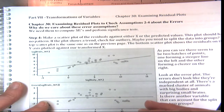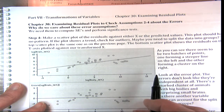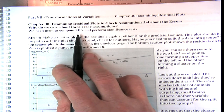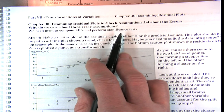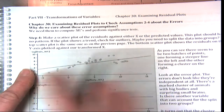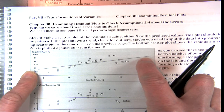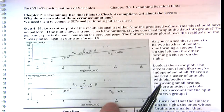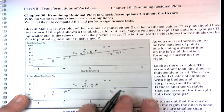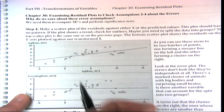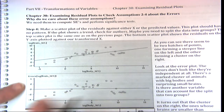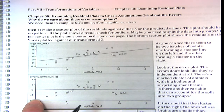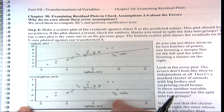If you're just estimating the regression line you don't really need them, but if you want to do inferential statistics, you need those errors. So what do we do? We make a scatter plot of the residuals against either the x or the predicted variables. If you have multiple x's, you'll do it for each x against the predicted variables.